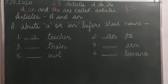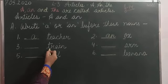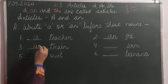Number 3, train. Again, T is a consonant sound. So we will write A here.